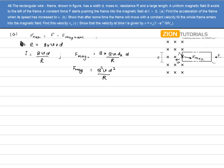Substituting this value in the net force equation: f net equals mass times acceleration equals f minus B²d²v/r. So the acceleration equals (rf minus B²d²v) divided by mr. This is the answer for the first part.